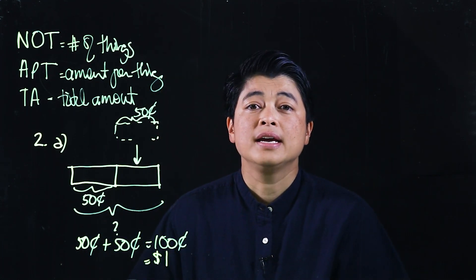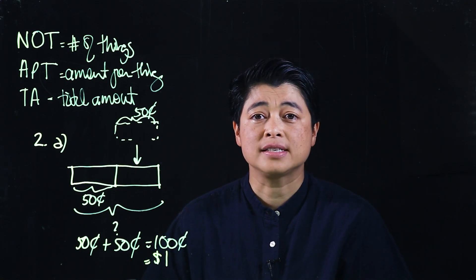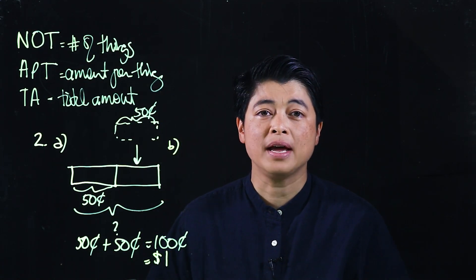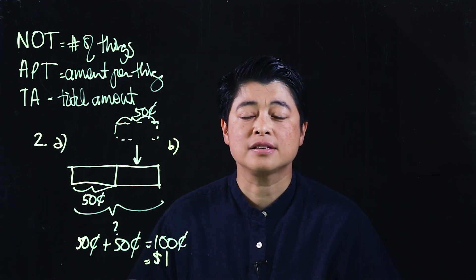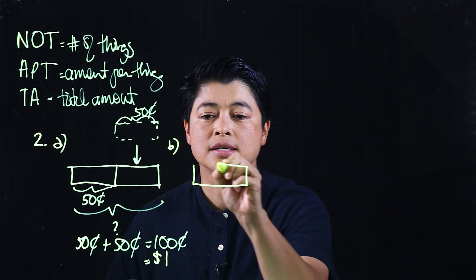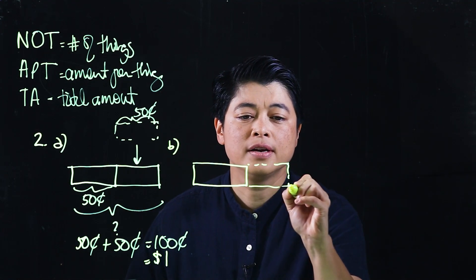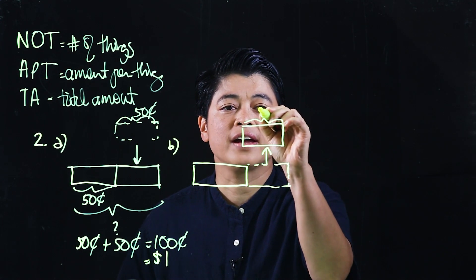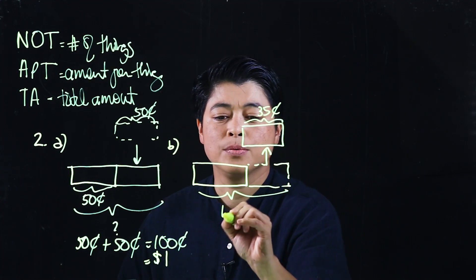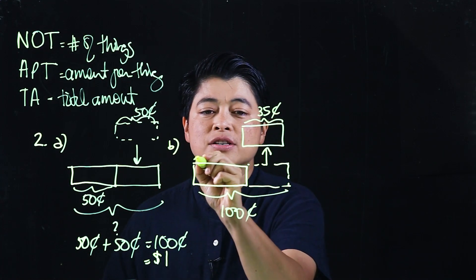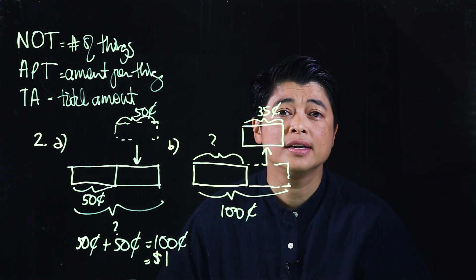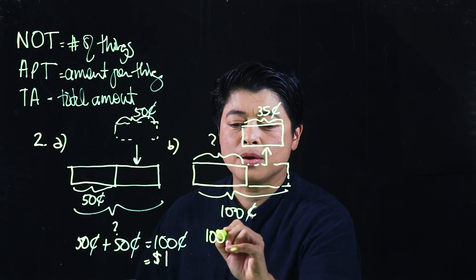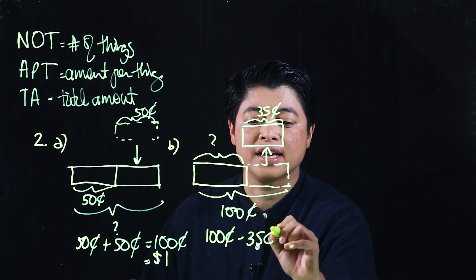Question B says Maggie spent 35 cents — how much money does she have left? This is a takeaway problem because she spent 35 cents from what she had. We remove 35 cents from 100 cents. Since what's missing is a part, this is a subtraction problem: 100 cents minus 35 cents equals question mark.